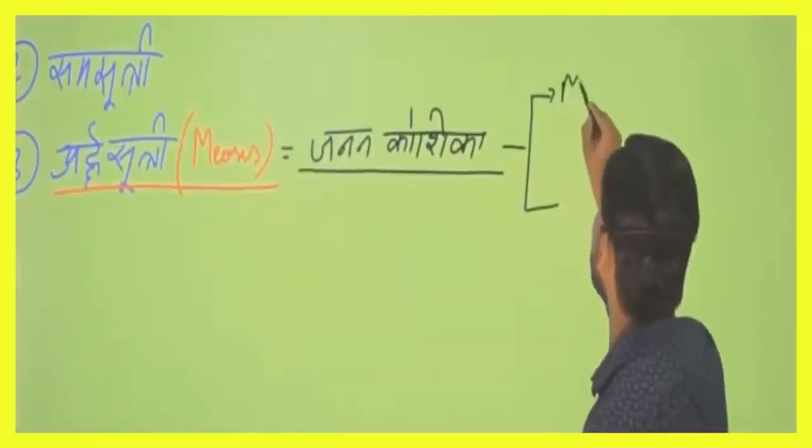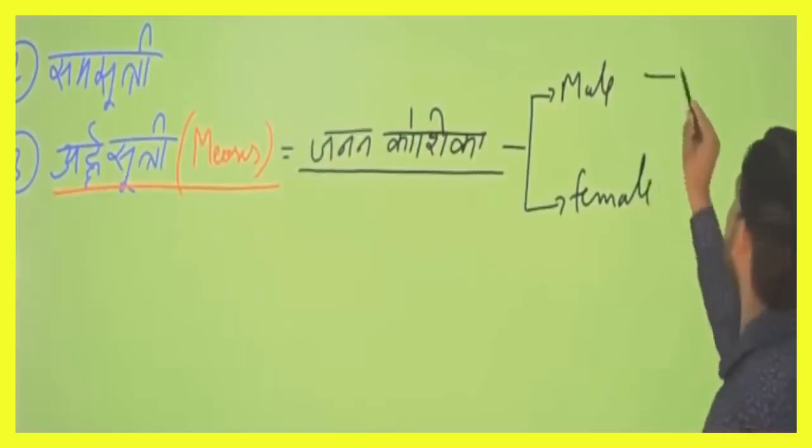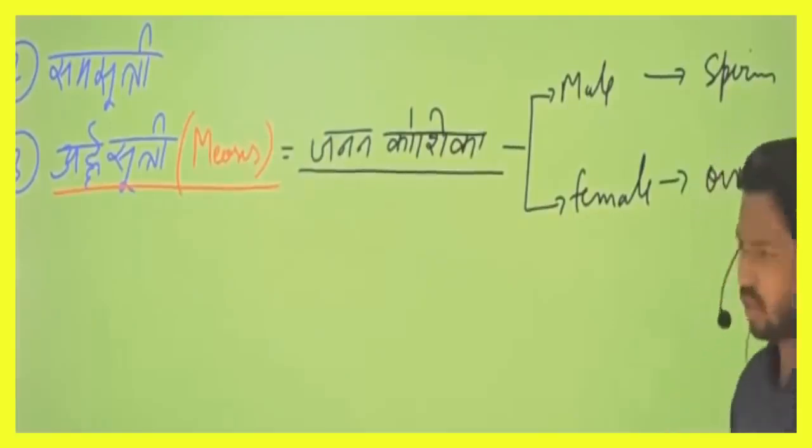There are two types of gametes. In the male, we will say sperm. In the female, we will say ovum. In the male, it is sperm. In the female, what happens? Ovum. Sperm and ovum.